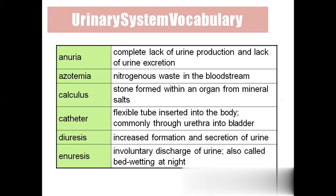Azotemia: The by-products of protein metabolism are nitrogenous waste products such as urea, uric acid, and creatinine. Azotemia means nitrogenous waste is in the blood. The suffix 'emia' (E-M-I-A) means related to the blood, while 'uria' (U-R-I-A) means related to the urine.